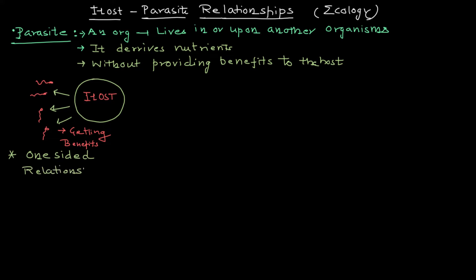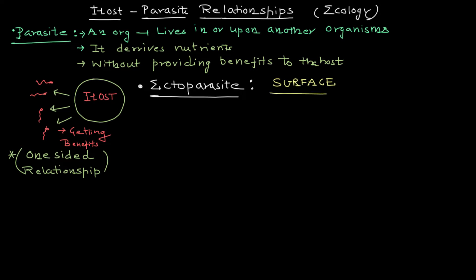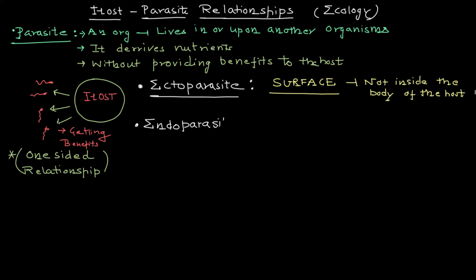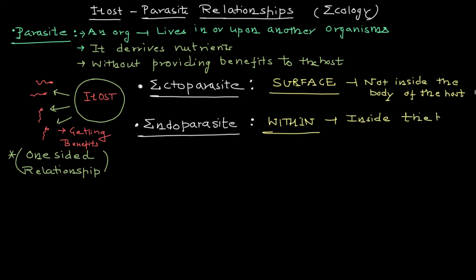Parasitic infections cause the host to be damaged and a lot of symptoms will emerge. We have two different categories: ectoparasite and endoparasite. Ectoparasite means surface — the parasites are not inside the body of the host; they are living on the surface. Endoparasite means within, so if the parasite is present inside the body we call it an endoparasite. This matches the definition of the parasite: lives in or upon another organism.